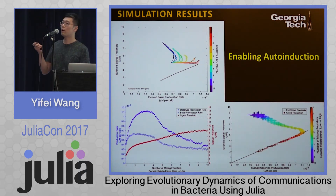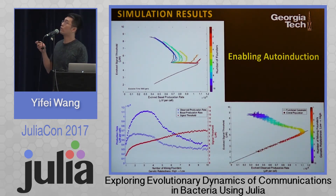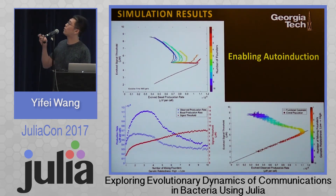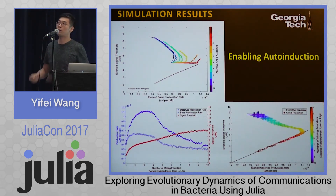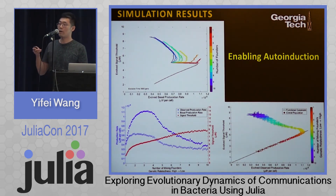This is the same simulation as in the previous slide, but we allow a third dimension to evolve, which is auto-induction. Initially the trajectories are very similar, but we see more persistent cooperation, especially when the genetic mixing is higher. We think the reason these trajectories are more robust is the ability of evolving the auto-induction mechanism. Generalized reciprocity protects cooperation from exploitation by cheats.